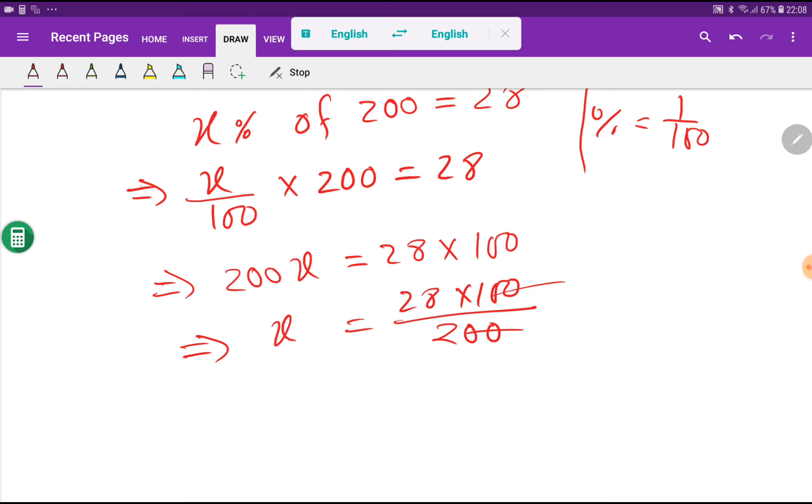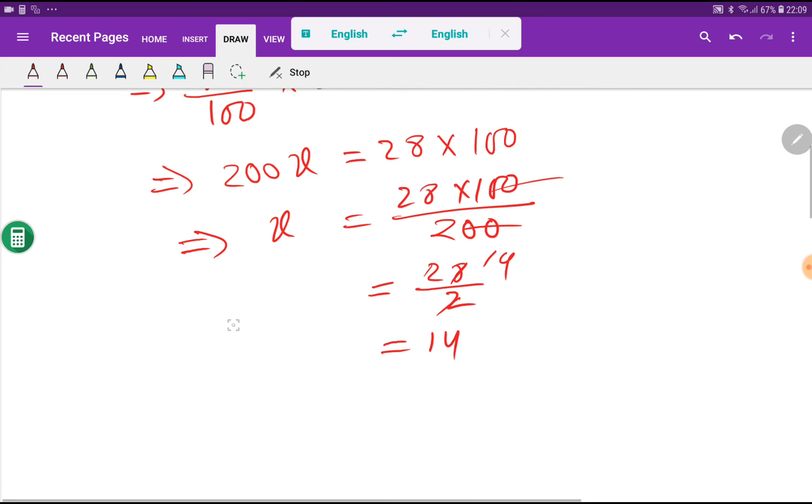So we are getting here 28 by 2. So basically we are getting here 14. x equal to 14.